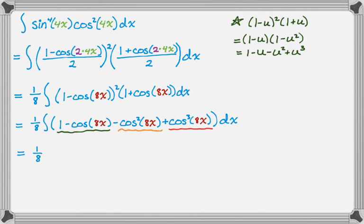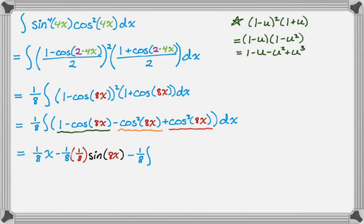Let's work through these. The integral of 1 gives (1/8)x. For the cosine(8x) term, integrating gives −(1/8)·(1/8)·sin(8x) = −(1/64)·sin(8x), remembering to distribute the 1/8 throughout. For the cos²(8x) term, I apply the formula: cos²(8x) = (1 + cos(16x)) / 2, pull out a factor of 1/2, and integrate 1 + cos(16x): that gives x + (1/16)·sin(16x), all multiplied by −(1/16).